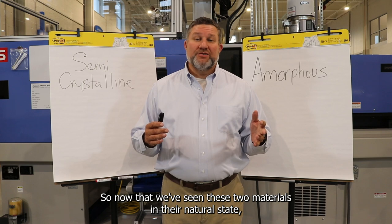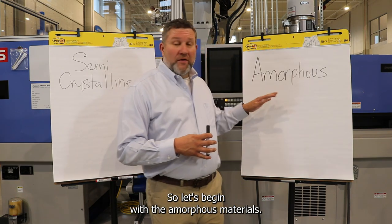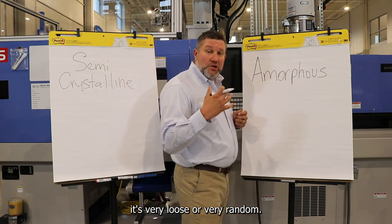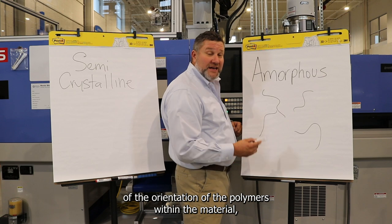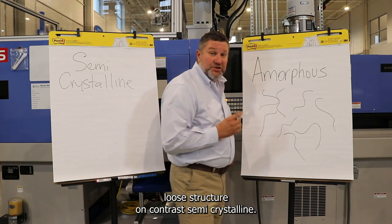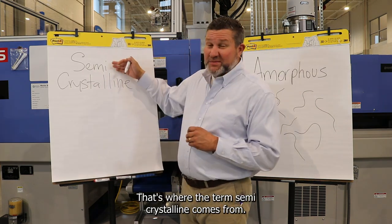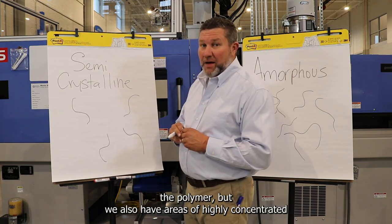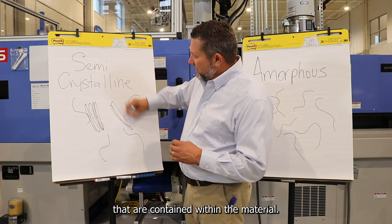Now that we've seen these two materials in their natural state, let's talk about why they both have the appearance that they do. When it comes to the amorphous material structure or its organization, it's very loose or very random. If we were to use magnification and look at the orientation of the polymers within the material, we would see no real organization — a very random, loose structure. In contrast, semi-crystalline does have amorphous regions to it — that's where the term semi-crystalline comes from. We do have a few amorphous regions floating around inside the polymer, but we also have areas of highly concentrated polymer organization contained within the material.